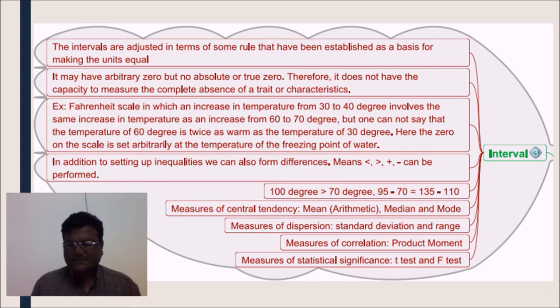Mean, that is arithmetic mean, median and mode can be used as measures of central tendency. Measures of dispersion - standard deviation and range. Measures of correlation can be used is product moment. Measures of statistical significance - t-test and F-test.